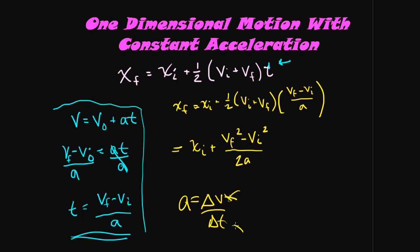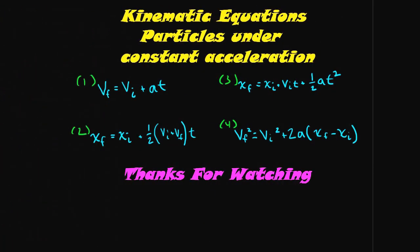The four formulas derived are commonly called the kinematic equations for particles under constant acceleration. In this video, we derived each one from the single base formula: acceleration equals the change in velocity over the change in time. When it comes time for the test, don't fret about memorizing a bunch of formulas — if you forget, you can always derive them again. Thanks for watching.